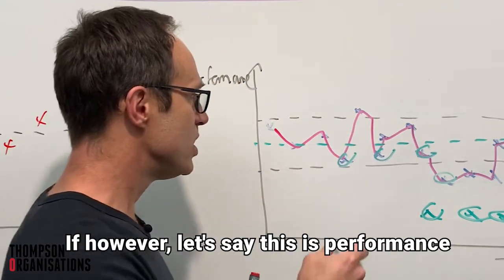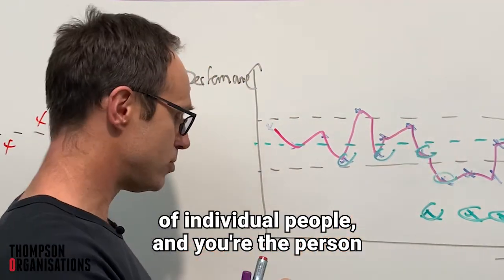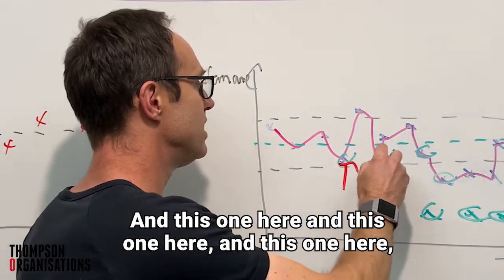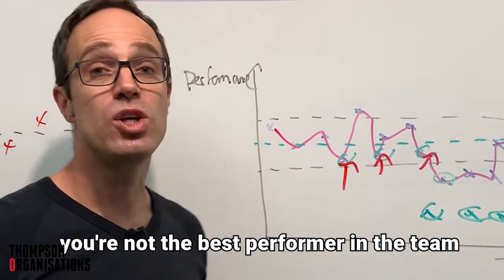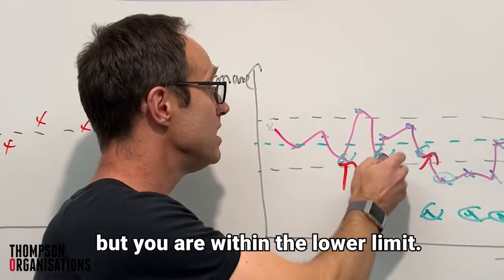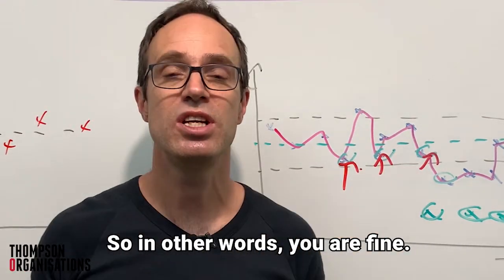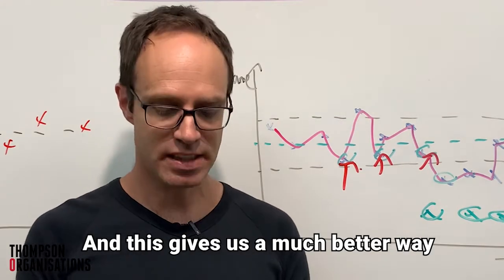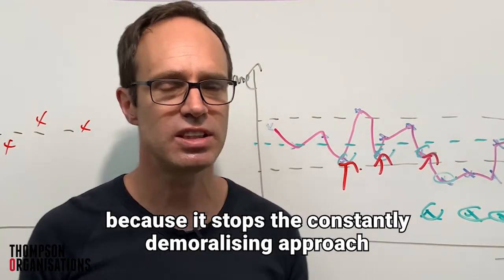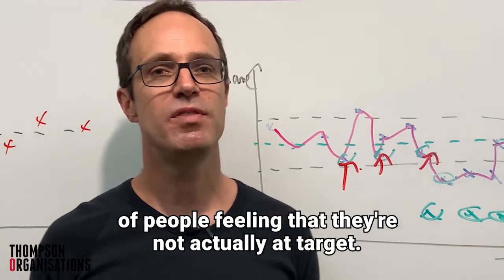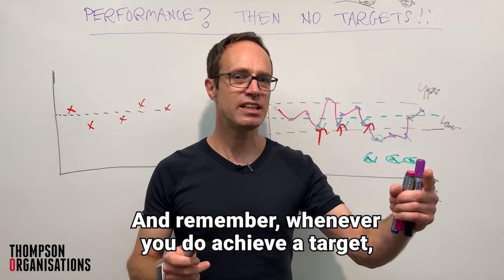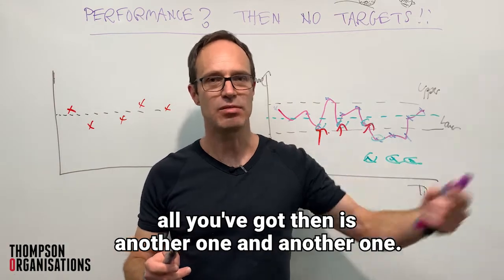If this is a performance chart of individual people and you're the person consistently performing here and here and here — you're not the best performer in the team, but you are within the lower limit — then you are fine. This gives us a much better way to look at how performance works, because it stops the constantly demoralising approach of people feeling they're not at target. And remember, whenever you do achieve a target, all you've got then is another one and another one.